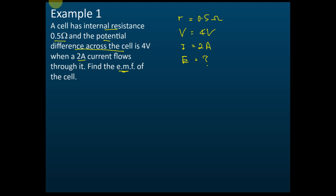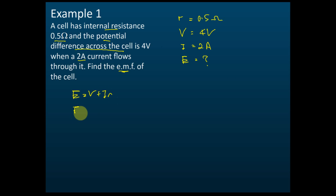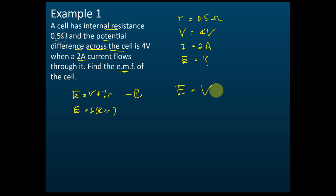So, which formula can we use to solve this problem? We have two equations: E equals V plus ir, or E equals i brackets R plus r. We use the first one. Now, in the first equation, the second r must be small letter r — it cannot be capital R — because capital R is load resistance and small r is internal resistance. They are different.